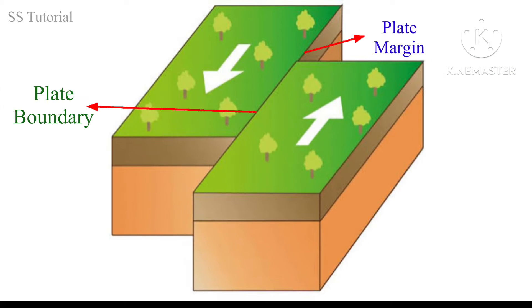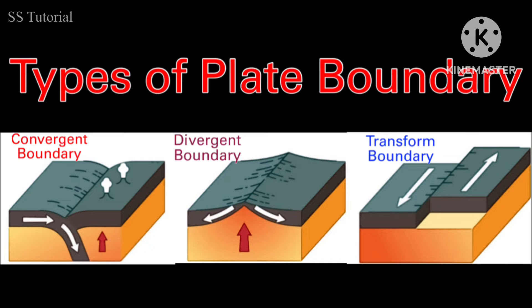The edge of a plate is known as a plate margin, and the area between two plates is known as a plate boundary. There are three basic types of plate boundary: convergent plate boundary, divergent plate boundary, and transform plate boundary. Let's know them one by one.